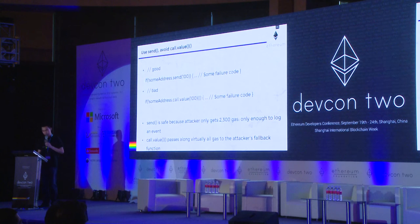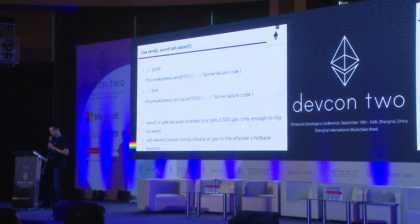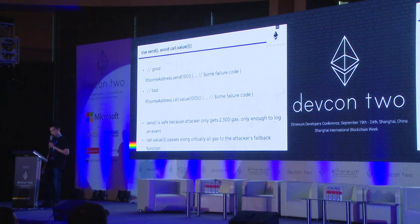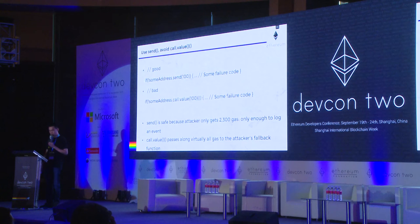A second tip is to use send and avoid call.value. If you've seen examples of vulnerable code, especially regarding reentrancy, they all involve call.value. Using send instead of call.value does not give the attacker enough gas to do damage with reentrancy — the attacker only gets 2,300 gas. With great power comes great responsibility, and that applies to call.value. So the tip is to use send and avoid call.value.